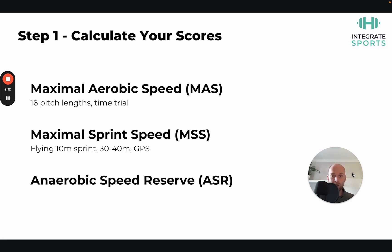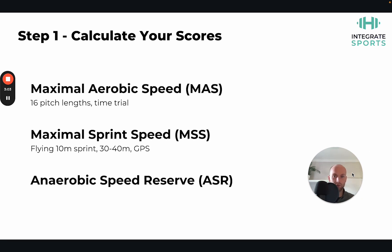To calculate Maximal Aerobic Speed, use something like a 16 pitch lengths time trial — run as fast as possible over that set distance and take the average time achieved to get your MAS score. For Maximal Sprint Speed, use a flying 10-meter sprint between two timing gates, for example a 30-to-40 meter sprint where you build up over 30 meters and are timed over the final 10 meters. Alternatively, you can use GPS to measure the maximal sprint speed achieved during games or training. Once you have both numbers, you can calculate your Anaerobic Speed Reserve.